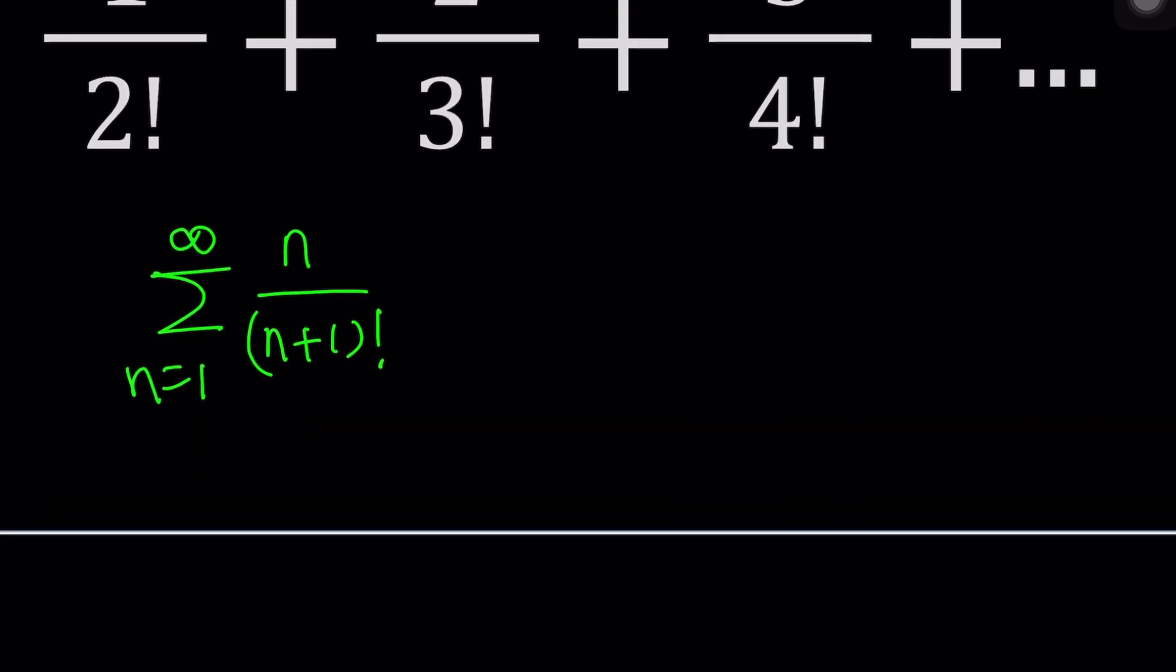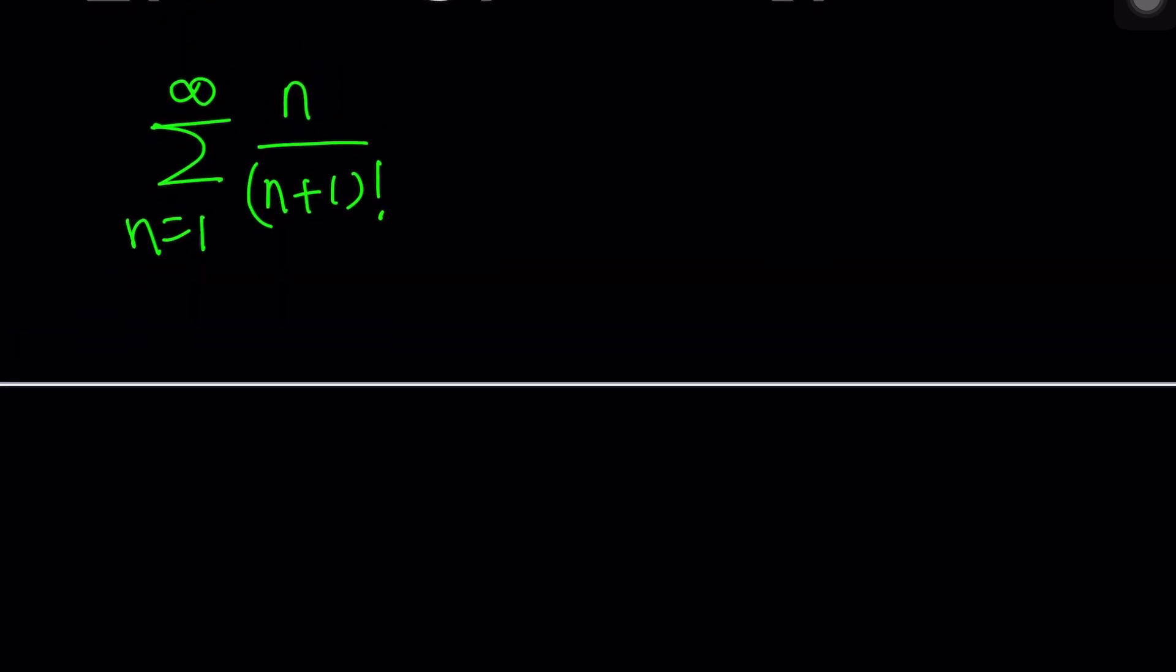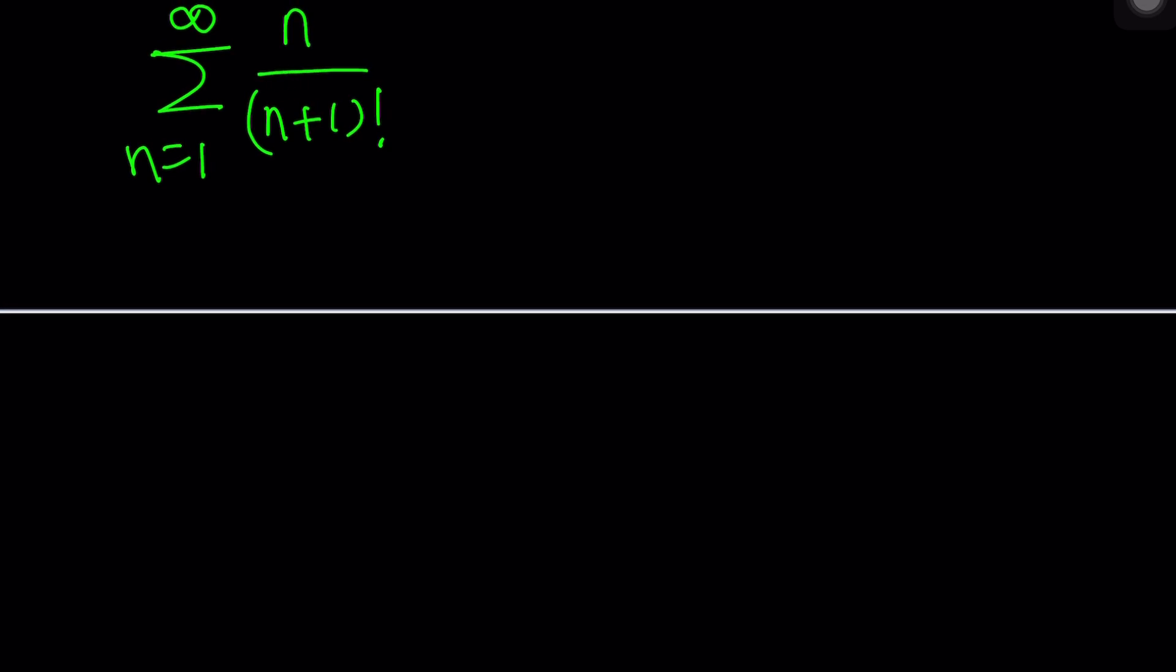So one of the ways you can look at this problem because of the factorial is take the general term. In other words, consider the sequence and then factor the n plus 1 factorial because we can write it as n plus 1 times n factorial, right?